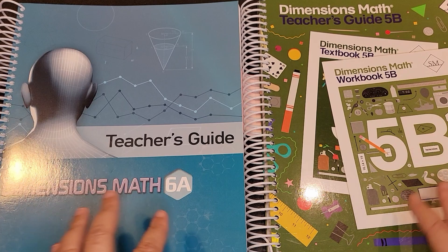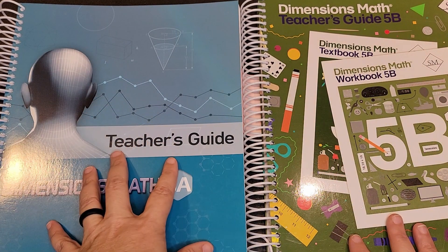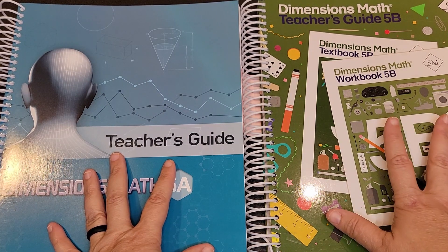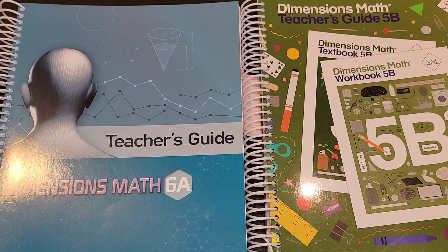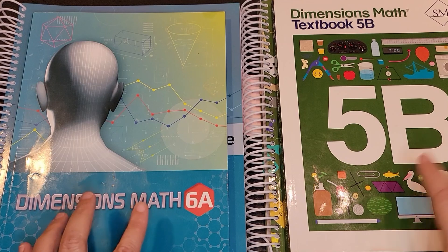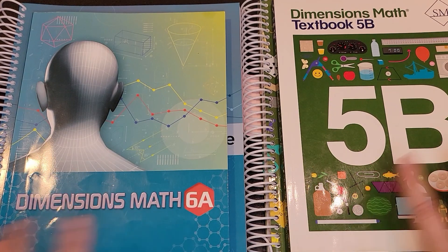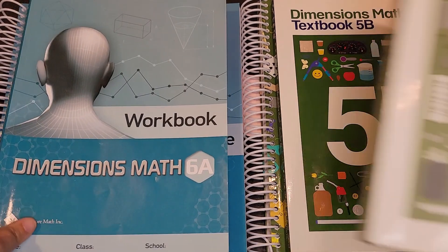Now you will notice there are definitely similarities. They're separated into an A and a B. So for six you will have an A and a B, for five and below you will have an A and a B. They both also have their textbooks. For both five and below and then six, seven, and eight you will have a textbook and then you also will have a workbook.